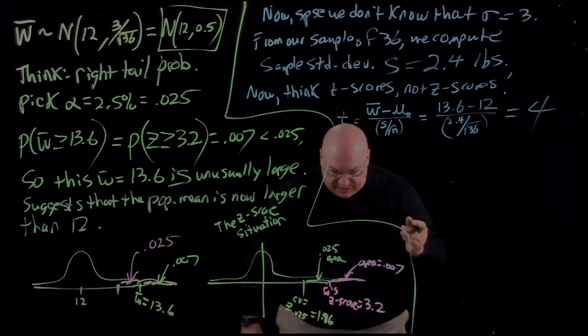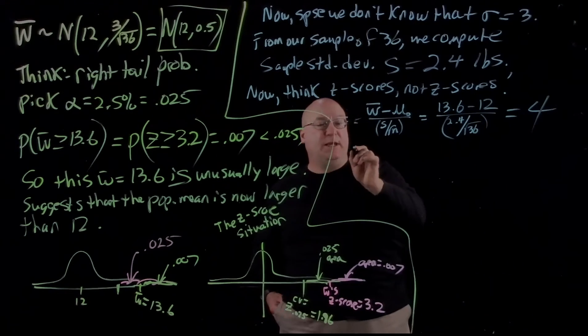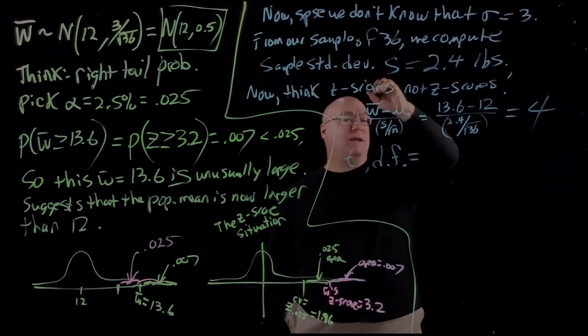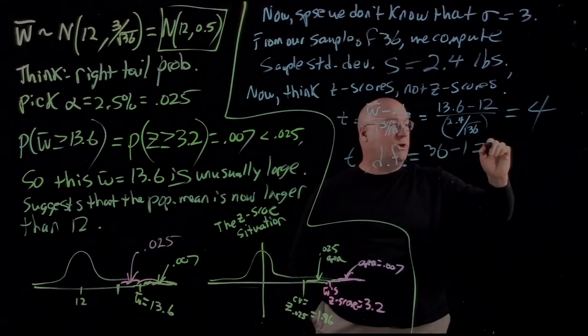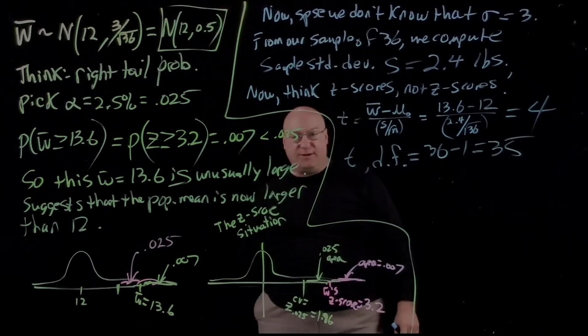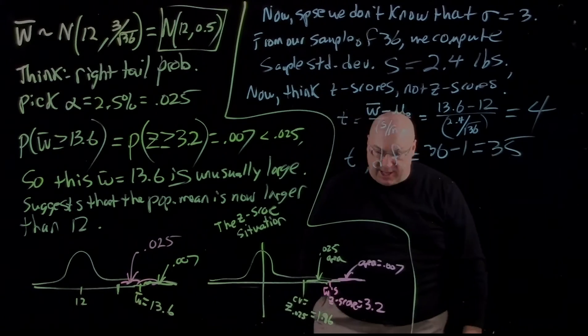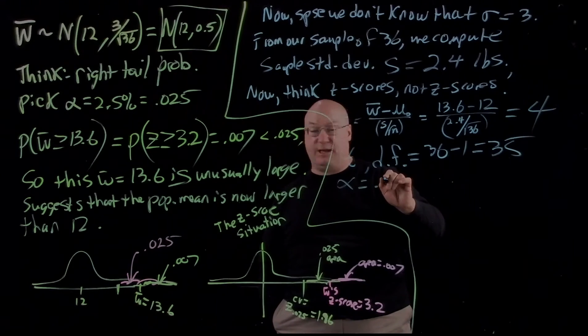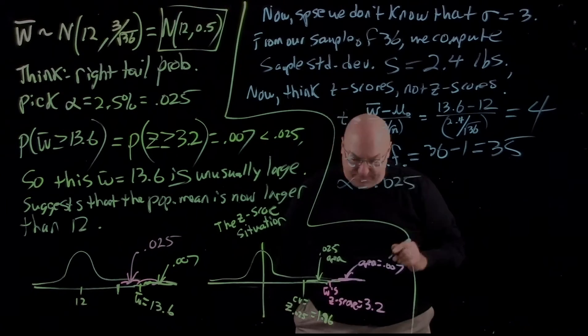You do this and I think you get 4. This is T, and the degrees of freedom are sample size 36 minus 1, that's 35. So I still have alpha is 0.025.